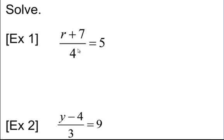So this means r plus 7 divided by 4. To get rid of that divided by 4, I need to multiply by 4. So let's multiply both sides by 4. Since it's being divided by 4, when I multiply by 4, it cancels those out. I'm just left with r plus 7 equals 20.